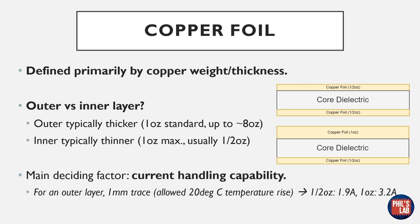The last type of layer in the build-up is essentially a copper layer, defined primarily by copper weight or thickness. Thickness is typically given in micrometers and weight in ounces per square foot. Available copper weights and thicknesses differ for outer versus inner layers — inner layers typically have a thin copper foil, usually about half an ounce, while outer layers can go up to eight ounces or more. The main deciding factor for copper foil is current handling capability. For example, a 1mm trace on an outer layer with 20°C temperature rise gives 1.9A at half-ounce and 3.2A at one-ounce thickness.